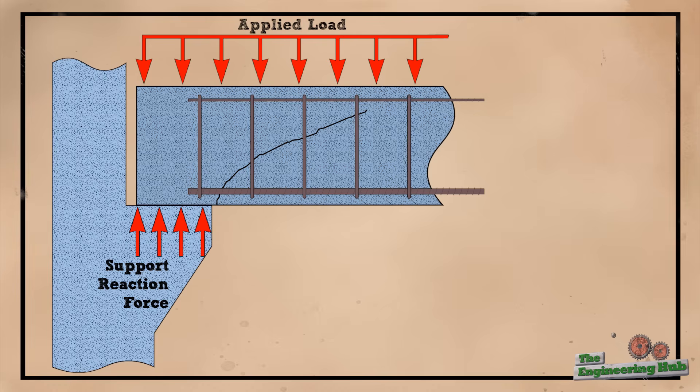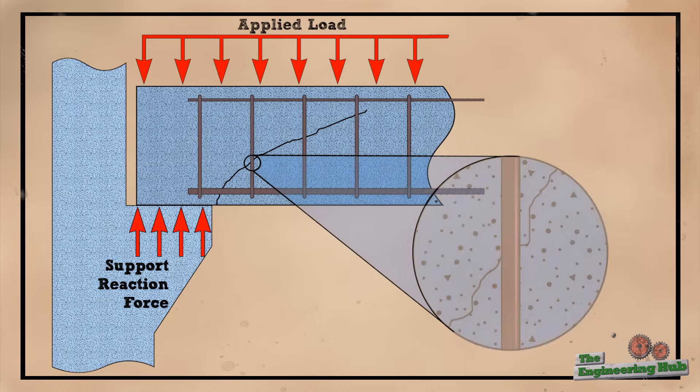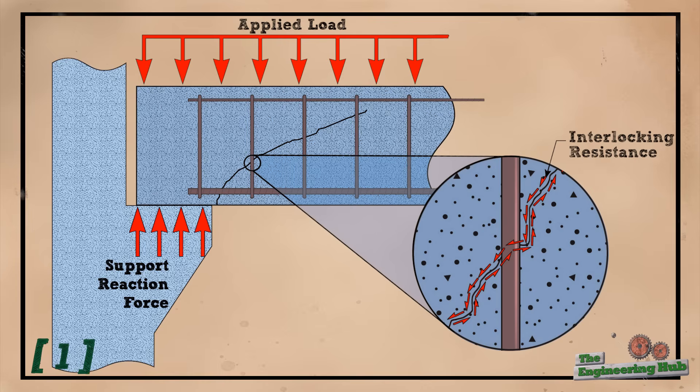Once the concrete is cracked, no tensile forces are transmitted across the crack. The only force that keeps the two sides of the crack from sliding past one another is the interlocking of the concrete aggregates. The interlocking force can be very strong and can provide between 33 to 50% of the shear resistance of a beam.